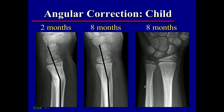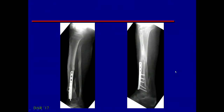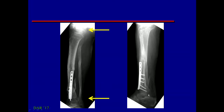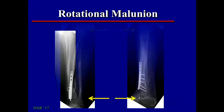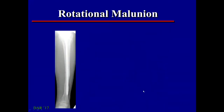One type of malunion that will never correct itself in children or adults is a rotational malunion. This may be harder to recognize unless you have two joints on each side of the fracture. Here we're looking at a lateral view of the knee but an AP view of the ankle — therefore, somewhere in between there's a 90-degree twist of the tibia and fibula. That's a rotational malunion, and just like an angular malunion, this can be fixed surgically.